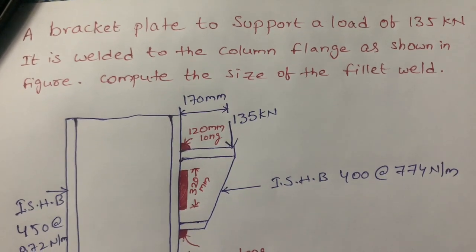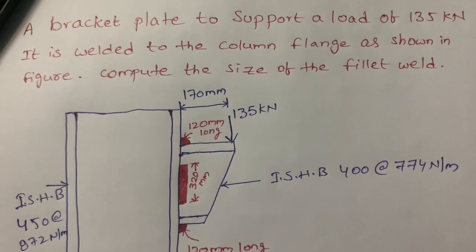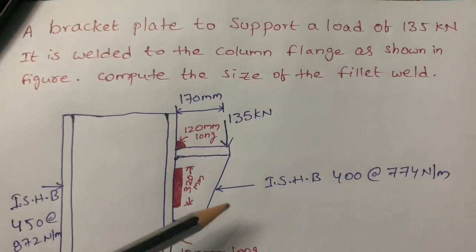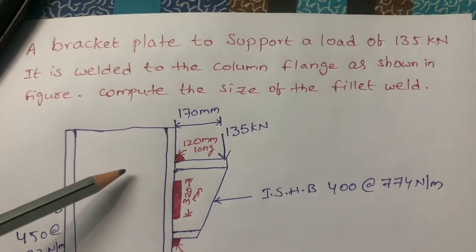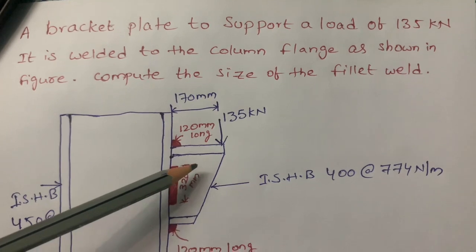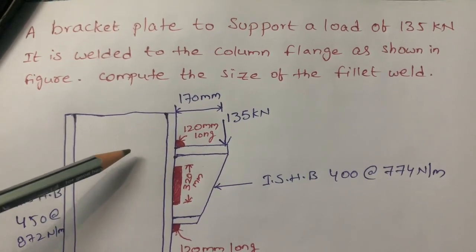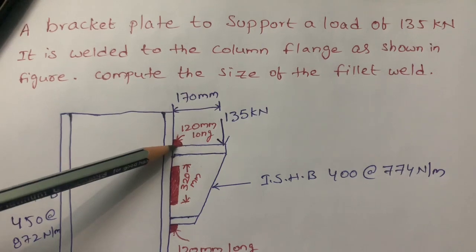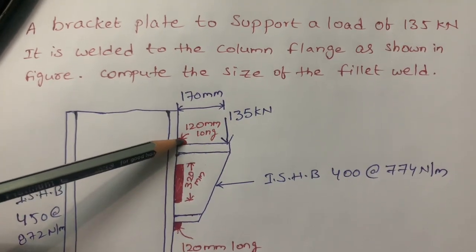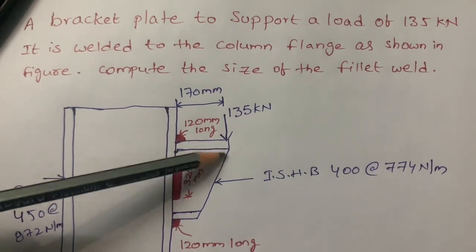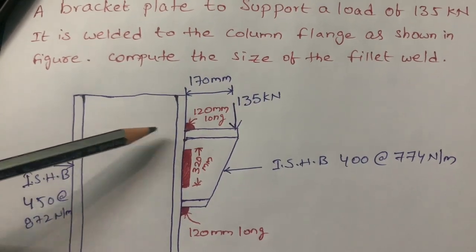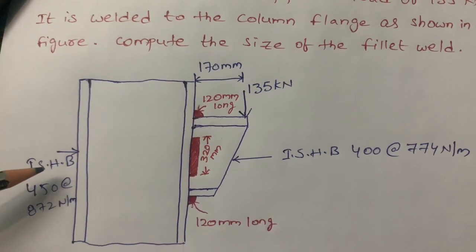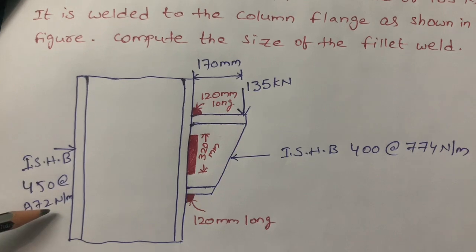Hello everyone. I am going to explain another eccentric model problem using welding. In my previous video I explained the same eccentric connection but the bracket plate was within the plane — one steel member connected to another. But in this problem the bracket plate is outside the plane. The red color shows the welded portion. This is ISHB 400 at 774 Newton per meter and this is ISHB 450 at 872 Newton per meter.